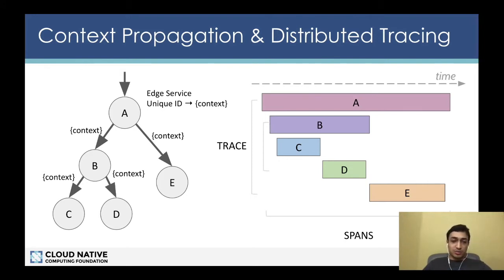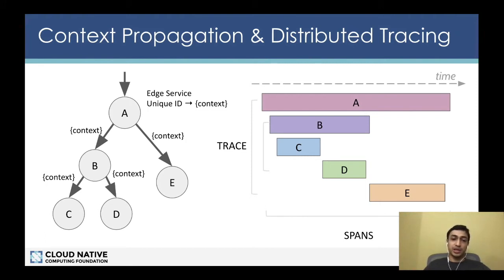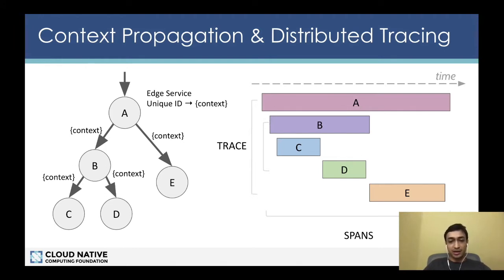Distributed tracing works on the concept of context propagation. On the left we can see a simple microservice architecture where an edge service A creates a unique ID for every inbound request. Every time it makes a downstream request, it passes along this unique ID as part of the context. As these services do some work and generate spans, they attach this unique ID to the span. Once emitted and stitched together in the backend, we can see the trace as shown on the right — formed with the help of the unique ID.